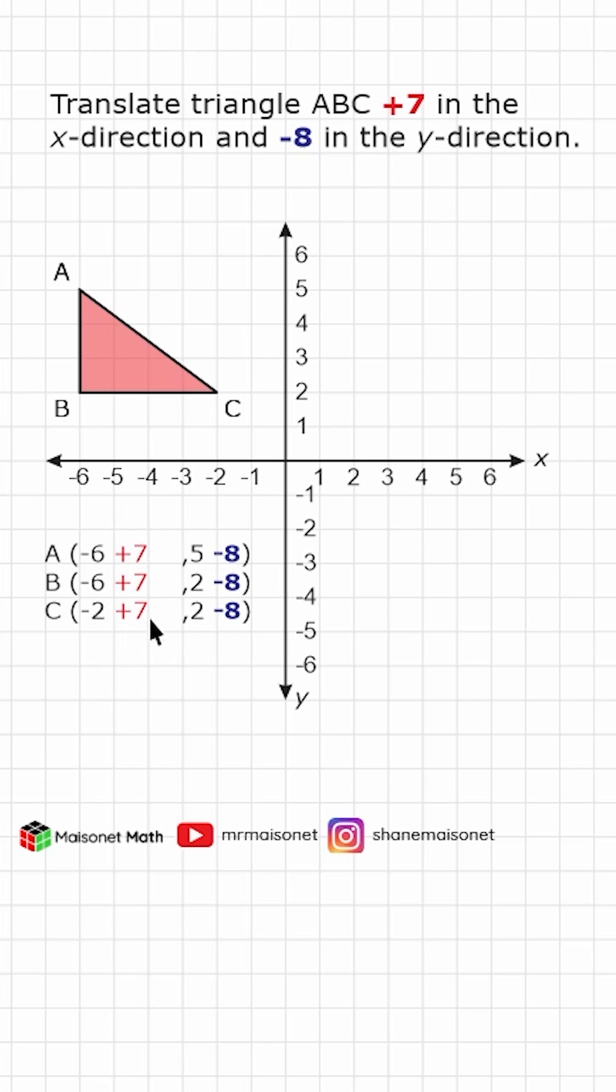In this case, we're going to add 7 to all of our x's and we're going to subtract 8 from all of our y's. And that will result in the coordinates to where your triangle is going to be translated to.